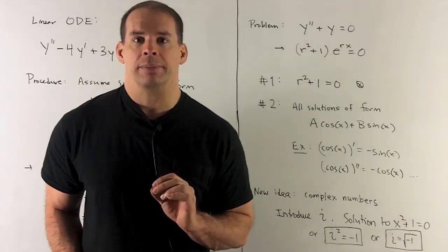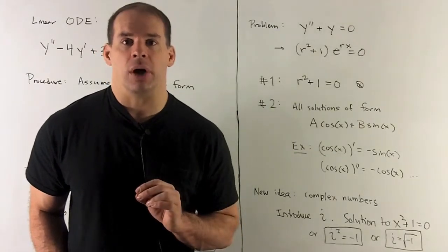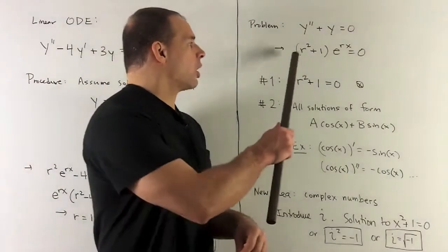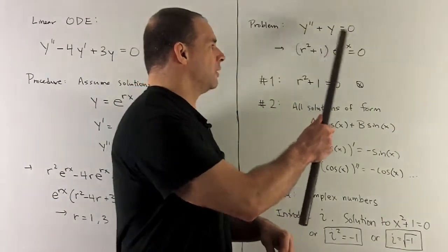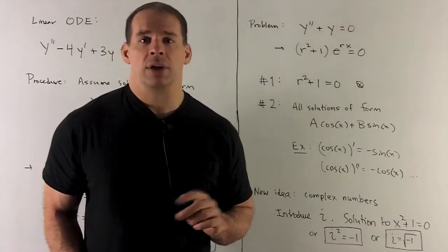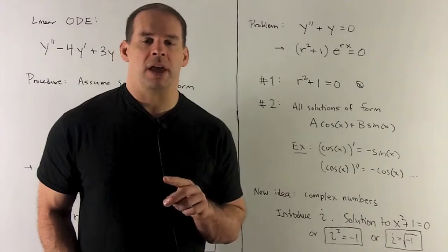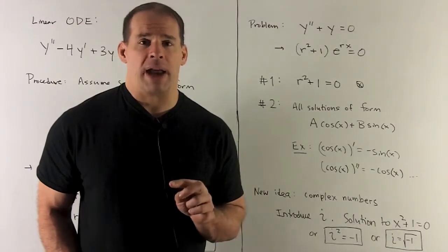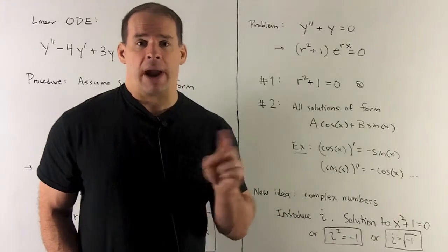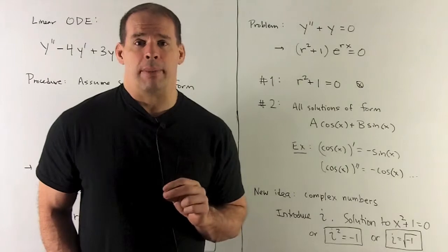Let's try something a little bit different. How about y double prime plus y equal to zero? If I go through the same procedure, what comes out will be r squared plus 1 times e to the rx equals zero. We throw away the e to the rx, we know we have r squared plus 1 equals zero. Move the 1 to the other side, we have r squared equal to minus 1, and then we're out of luck. If I take any number, square it, I get zero or a positive number. So I'll never be able to get minus 1.